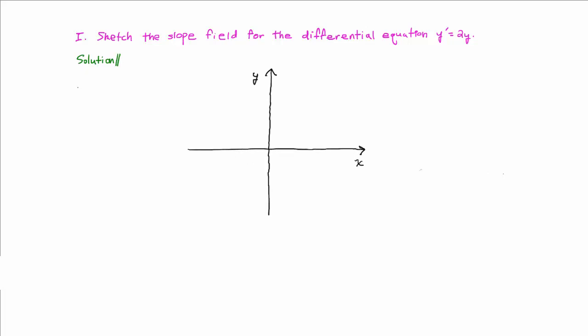The second thing is that we need to remember that a solution to y prime equals 2y is a function y equals f of x that satisfies the equation. In other words, y is a solution exactly when the derivative of y equals twice the value of y at each point x.